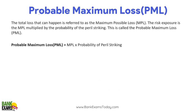That is important — Probable Maximum Loss, or PML. The formula is: PML = Maximum Probable Loss (MPL) multiplied by the probability of the peril striking. So the risk exposure equals the MPL multiplied by the probability of the peril occurring — for example, multiplying the maximum possible loss by the probability of an earthquake occurring. PML and MPL — please remember that, it's very important for your exam.